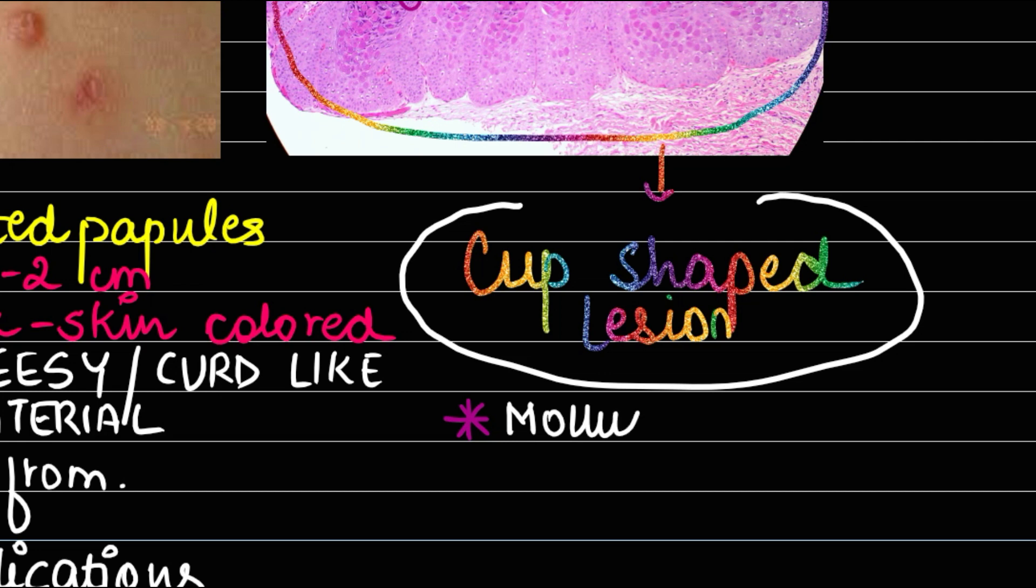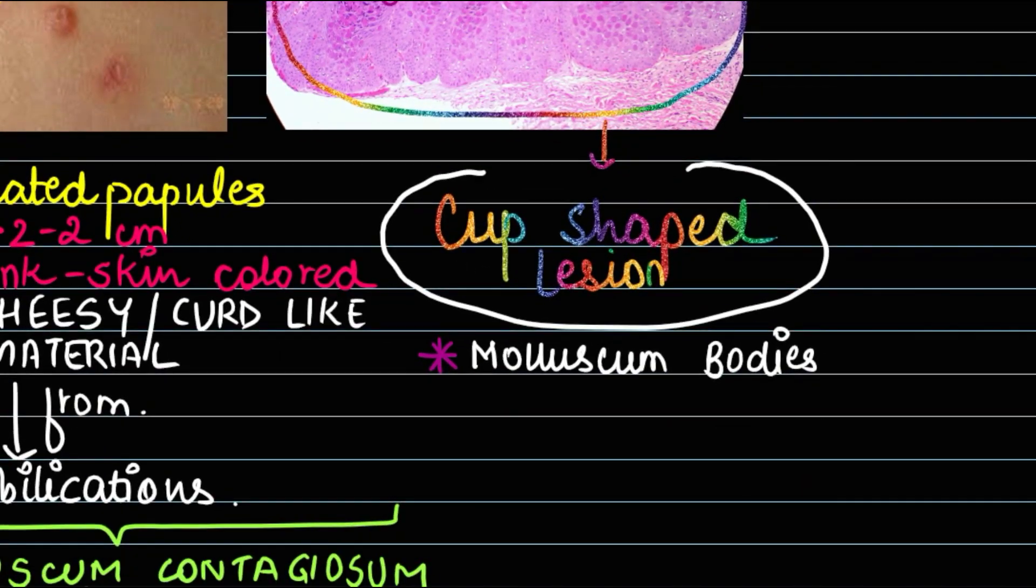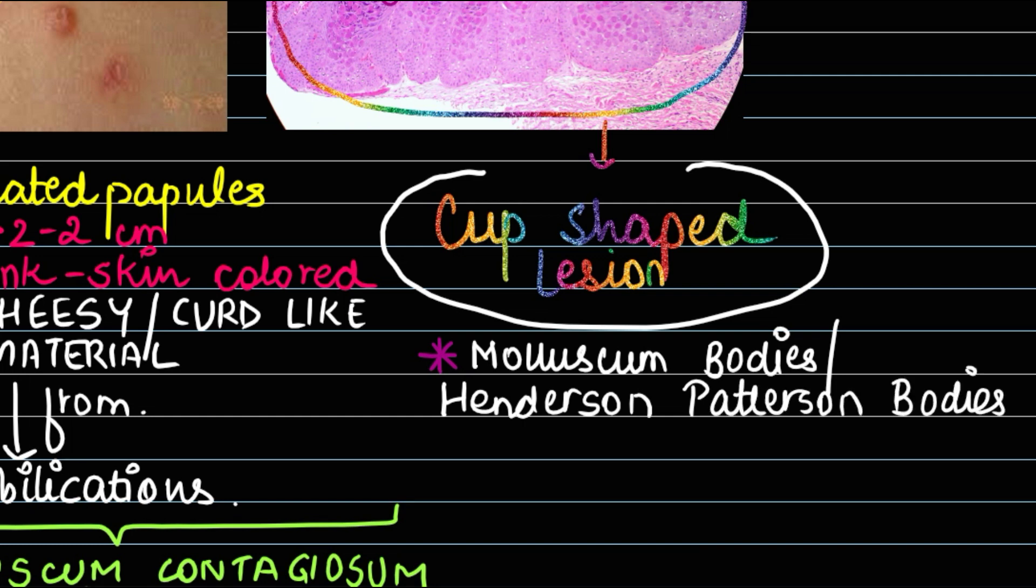Simple to remember that molluscum bodies are seen in molluscum contagiosum. These bodies have another name as well - the HP bodies or Henderson-Patterson bodies.